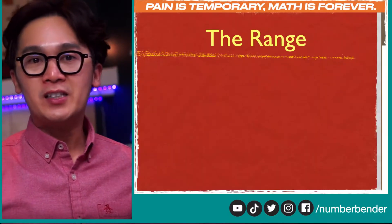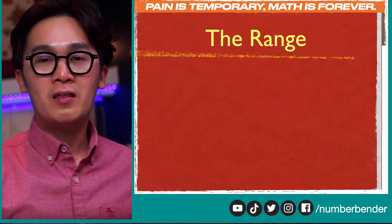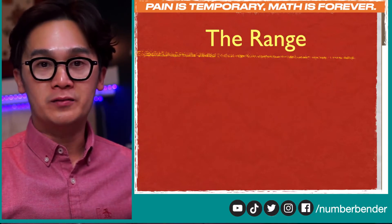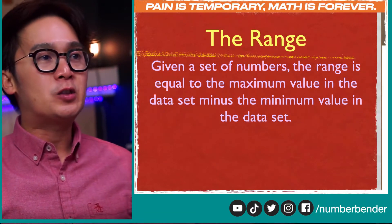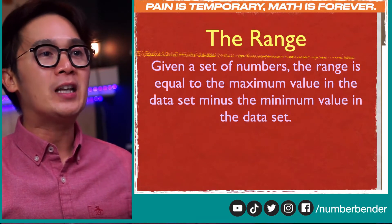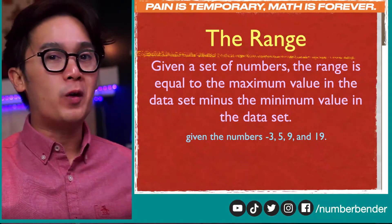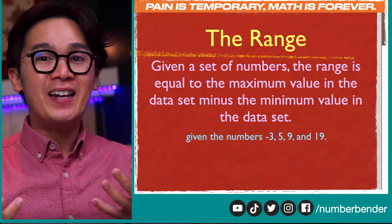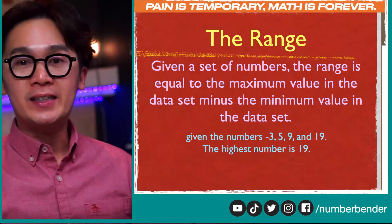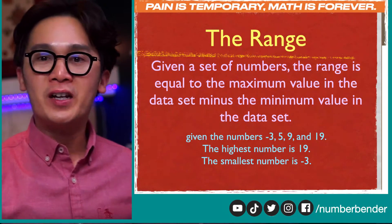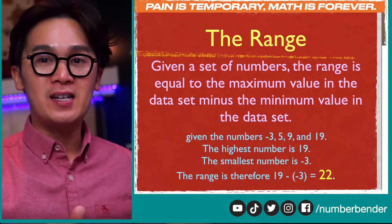How are we going to compute for the standard deviation, or the measure of the spread of a certain group of data? We'll start with how we measure the range. Range is another form of measure for spread, and to find the range of our data set, all we need to do is find the difference between the maximum value and the minimum value. For example, with -3, 5, 9, and 19, the highest number is 19 and the lowest is -3, so 19 minus negative 3 gives us 22. The range of this data set is 22.